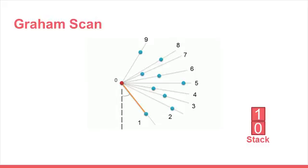You'll see 1 has the smallest angle to this axis. For the rest of the points, you'll do a counterclockwise scan to get the order of the angles. That is where the scan in Graham Scan comes from.